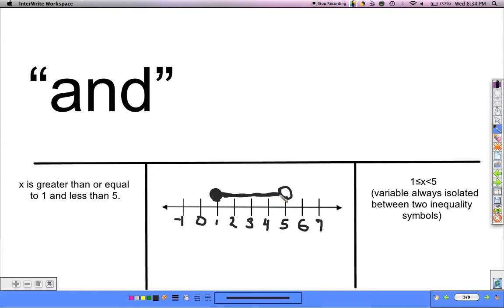So my solution set for this is everything from this closed in circle to everything just before this open circle. Remember the open circle means I don't include 5 as a solution.